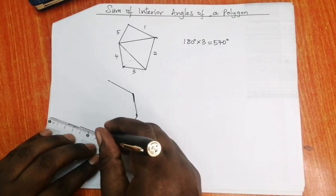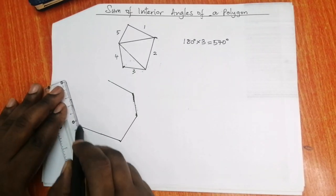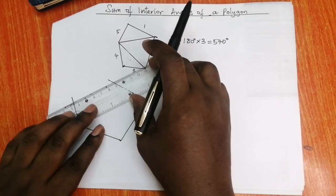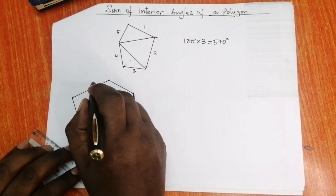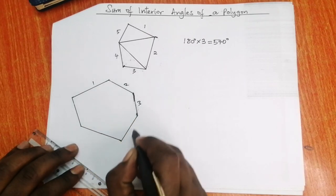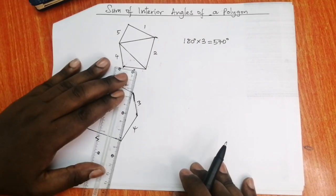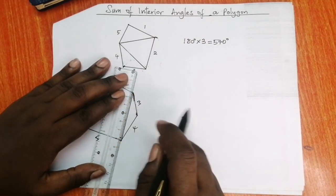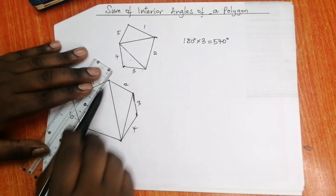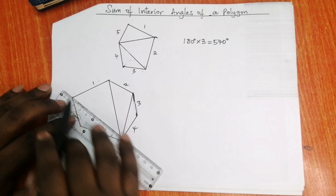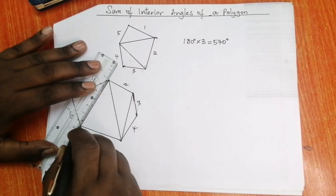We're going to draw a polygon now with more sides than this one — this had five sides. Let's see what happens when it has more sides. How many sides here? One, two, three, four, five, six. Let's divide it into triangles.